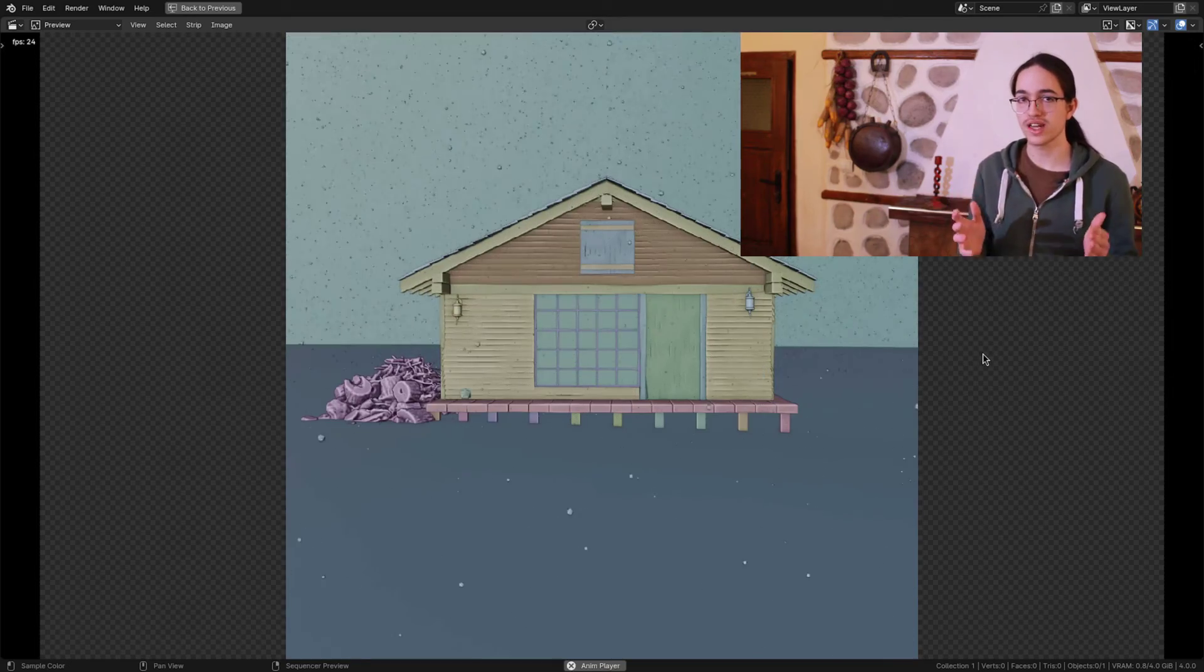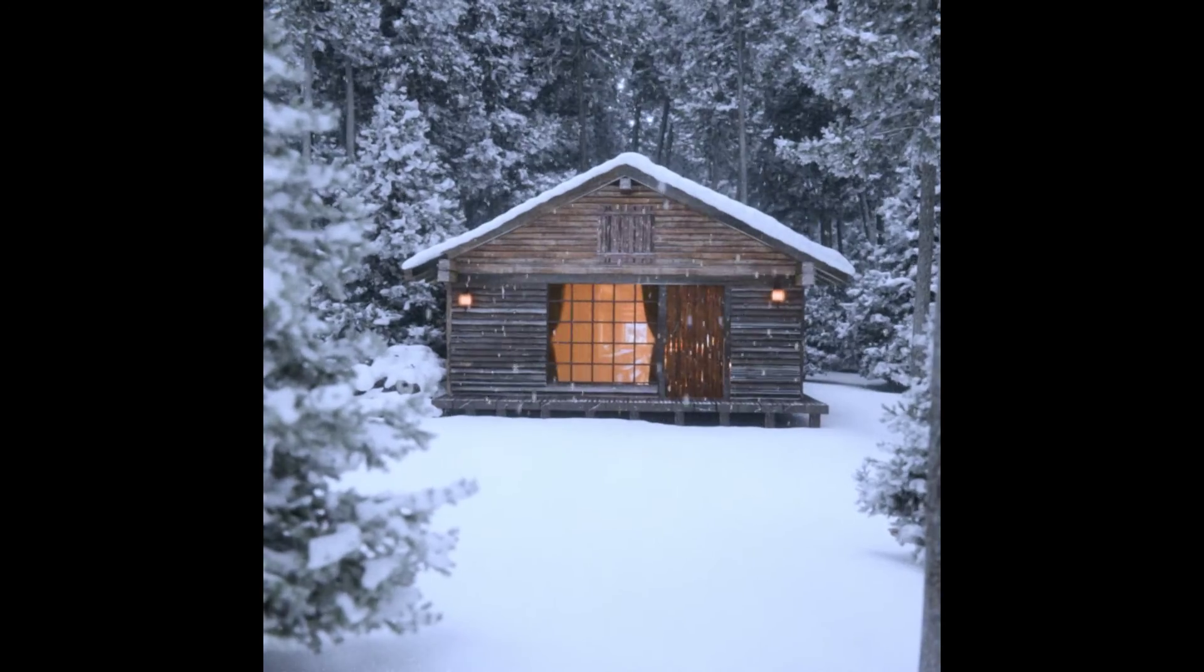Now, if you bake the particles and look at them, you may notice that they kind of go perfectly straight down like this. And maybe that's what you want, but if not, feel free to add a wind force field to make the snow float sideways. And that's the snow done, but I do still have one little bonus tip left.